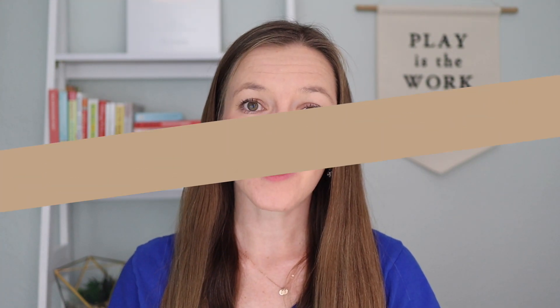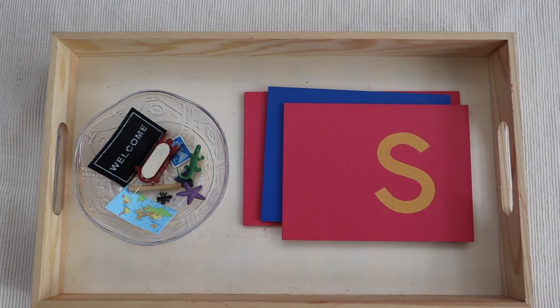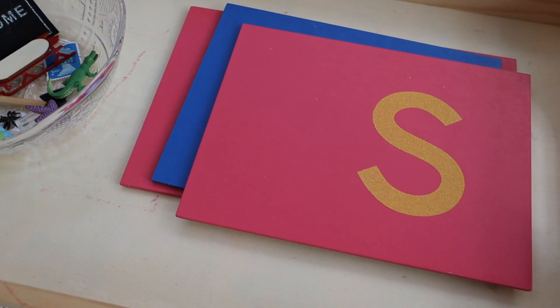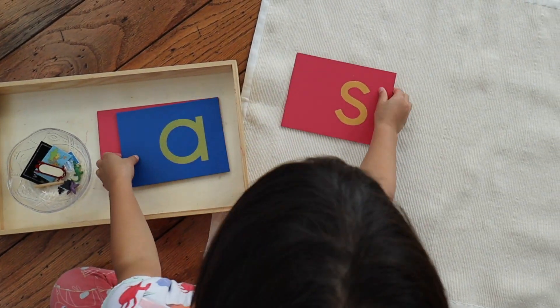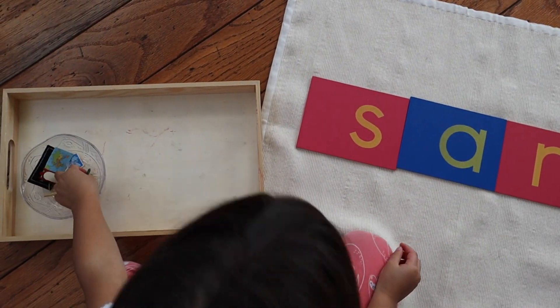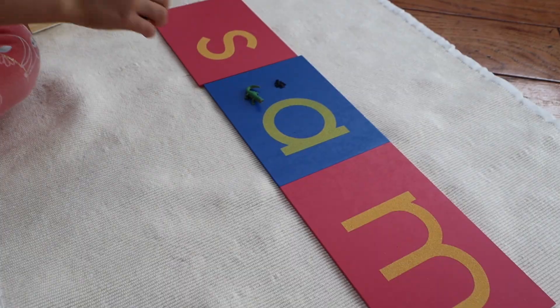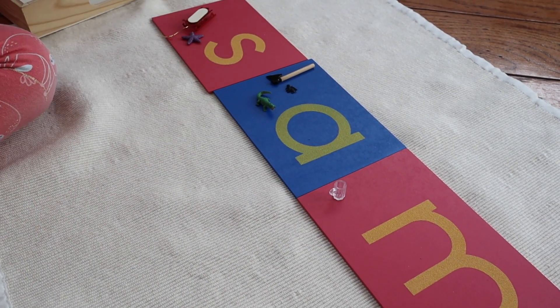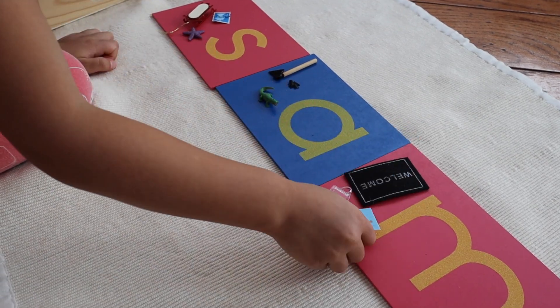The next activity is called object to letter sorting, and it's appropriate for a child who has developed a fair amount of phonemic awareness but is now learning to associate what the sounds of the letters are with what their shape looks like. For this activity, you'll provide your child with a basket containing two to three different sandpaper letters as well as a small set of language objects whose beginning sounds correspond to those sandpaper letters. Your child will lay out each sandpaper letter in a row, then select one language object from the basket, identify the correct beginning sound, and place it next to or on top of the corresponding sandpaper letter, continuing until all objects are correctly sorted.